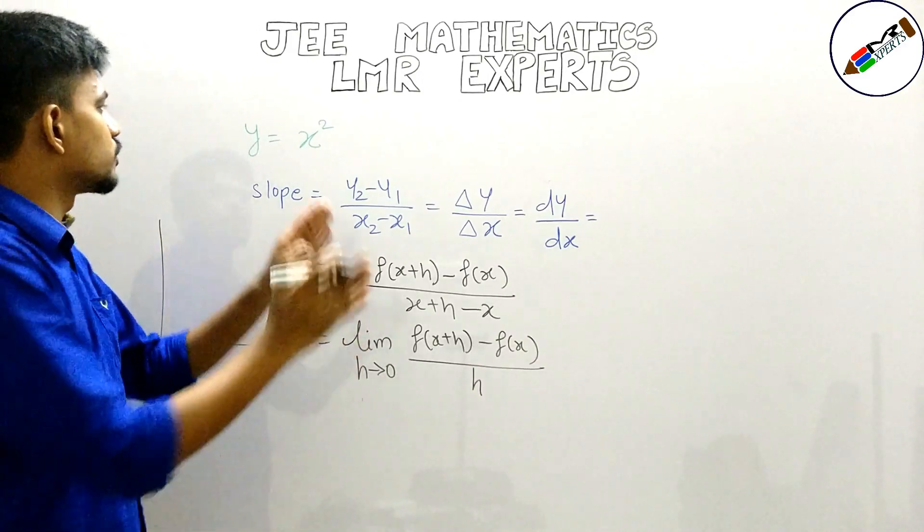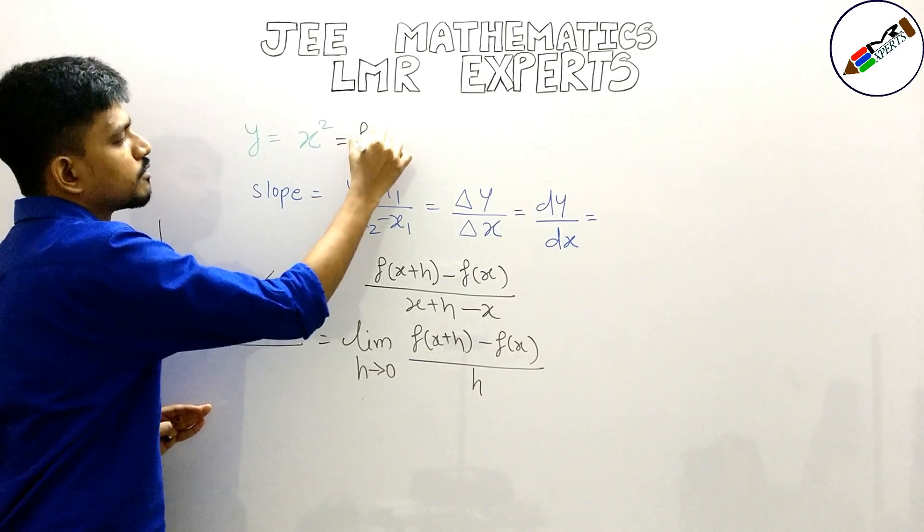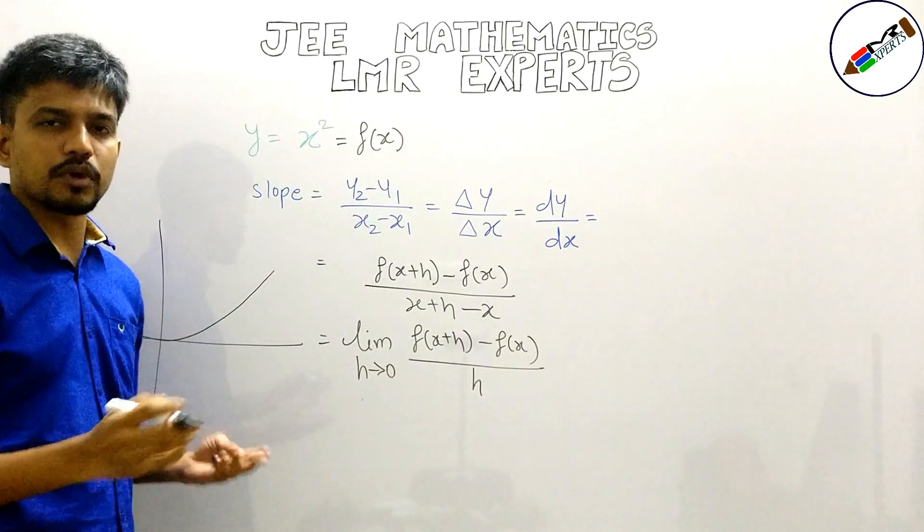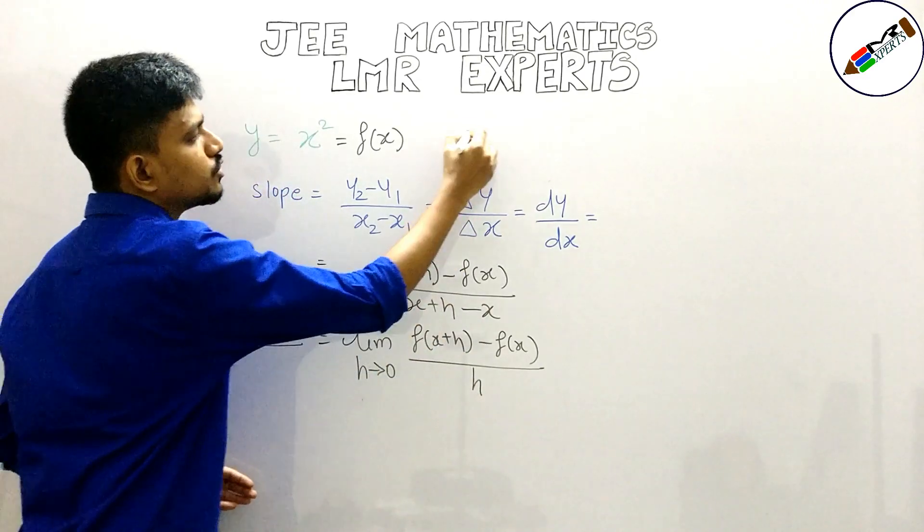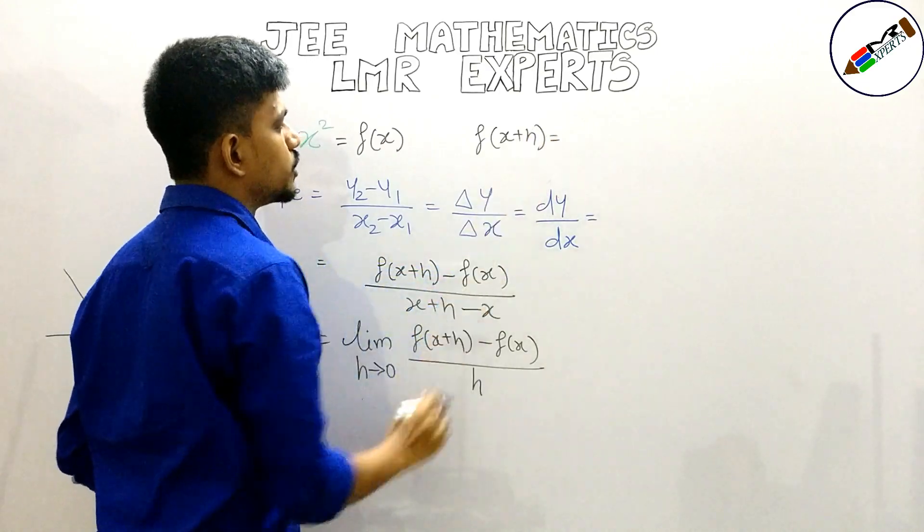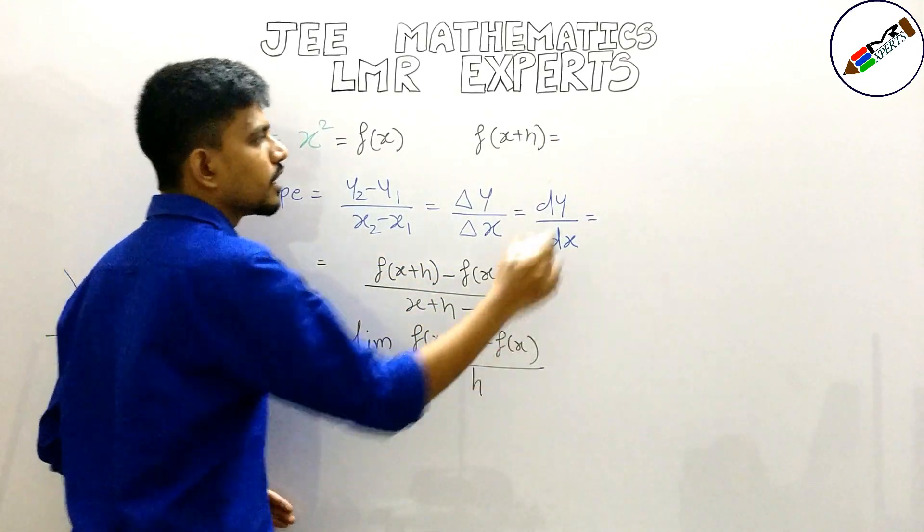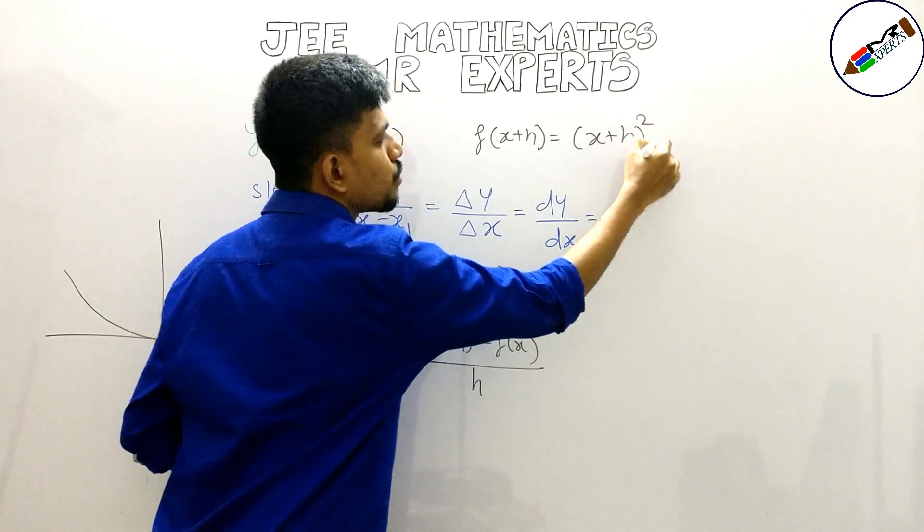Now let us go through the function once again. y is equal to x square actually means f of x is equal to x square. Obviously we need x plus h value so we will write down f of x plus h is equal to, as you can already guess, it would be x plus h the whole square.